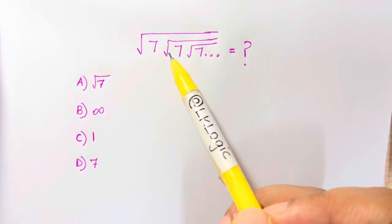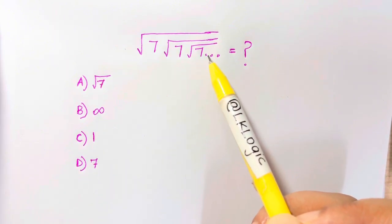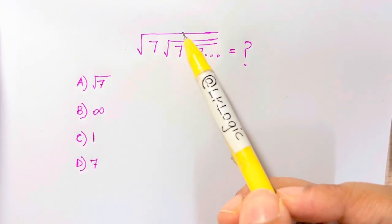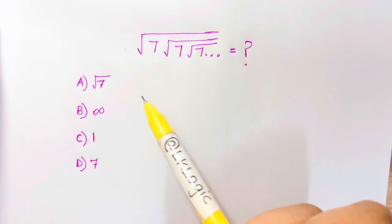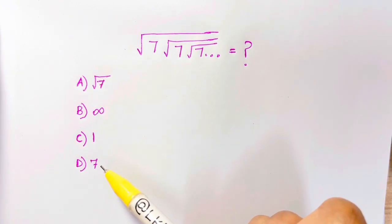Square root of 7 times square root of 7 times square root of 7 and so on continues, which is under the square root. So what is the answer from these four choices?